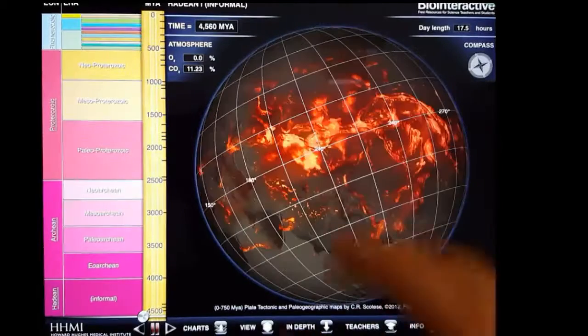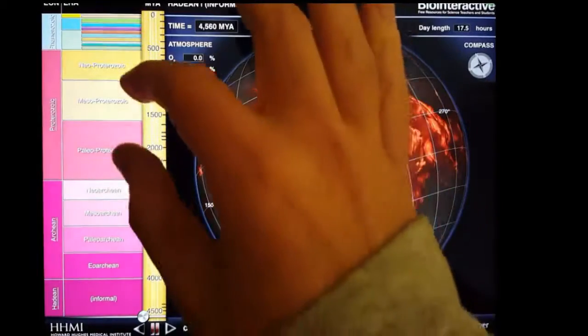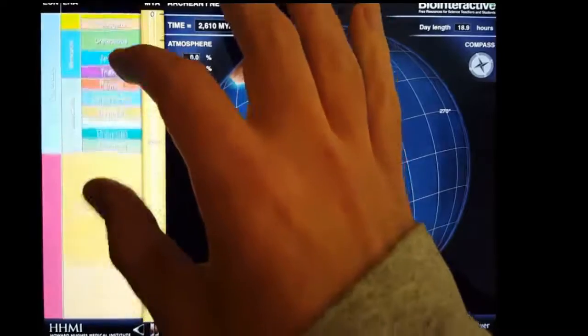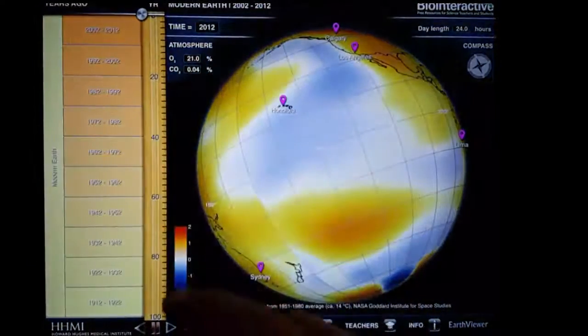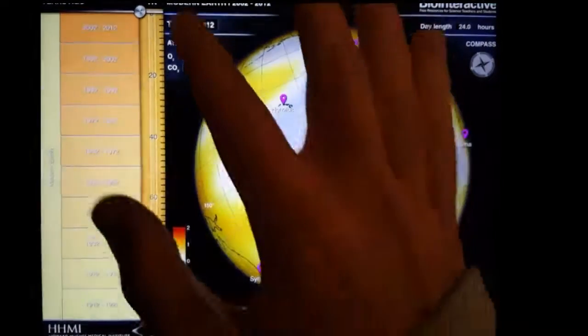I can also zoom in and examine the Earth as it was the last 100 years. When zooming in this closely, I can take a look at how the temperature changed since the early 1900s.